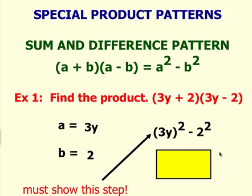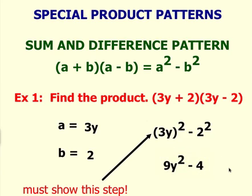3y times 3y is 9y squared, and 2 times 2 is 4. So your final answer is 9y squared minus 4.